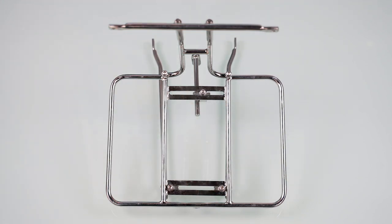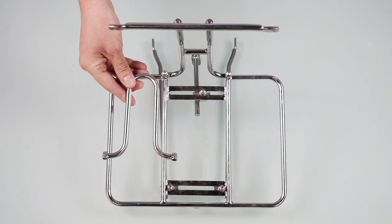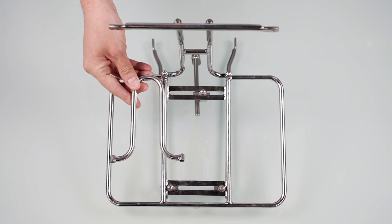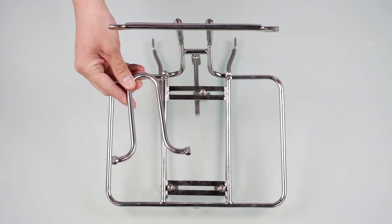The uprights are removable and can be interchanged between a decalure receiver and a tombstone loop for a basket or other luggage. Both options are included.